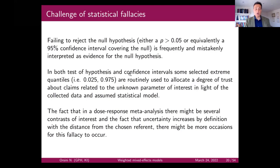In hypothesis testing and confidence intervals, selected extreme quantiles — the 2.5 and 97.5 — are routinely used to allocate some degree of trust about claims for the unknown parameter of interest.